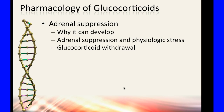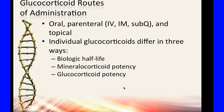Adrenal suppression can develop from overproduction of cortisol, or from stress — stress is known to cause increased cortisol, which can lead to weight gain in the midsection, giving an apple shape. There can also be adrenal suppression with withdrawal, so tapering is essential. Routes of administration include oral, parenteral (IV, IM, subcutaneous), and topical. Individual glucocorticoids differ in half-life, potency, mineralocorticoid versus glucocorticoid ratio, and other characteristics.